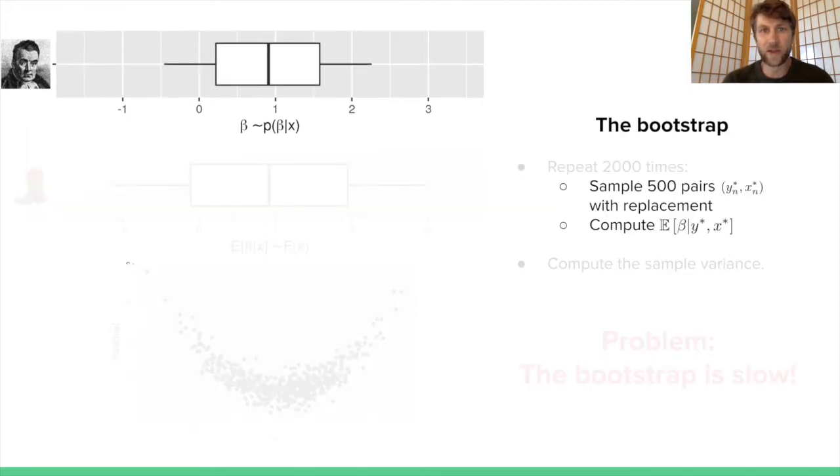The simplest way to compute frequentist variances of posterior expectations is the bootstrap. Here's how the bootstrap works. We're going to resample 500 pairs with replacement from our original data, where a pair is a response and a regressor, and compute the posterior expectation given this new pseudo-data set. Because we're sampling with replacement, some points might not appear at all, some will appear multiple times. We'll do that whole procedure many, many times. In this case, I did it 2,000 times. We compute the sample variance of that posterior expectation over this whole procedure. That sample variance is called the bootstrap estimator of the variance, and it's consistent.